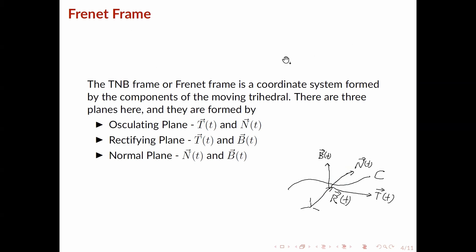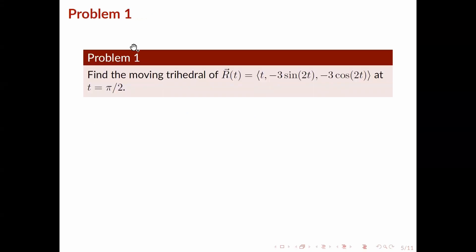That's all for the review, let's move on to some problems. The first problem asks us to find the moving trihedral of r, which is a vector-valued function defined by a given expression, and find the moving trihedral at t equals pi over 2. Recall that the moving trihedral is composed of the three vectors we defined: the tangent, normal, and binormal vectors. The obvious way to tackle this problem is to find each of those three vectors.